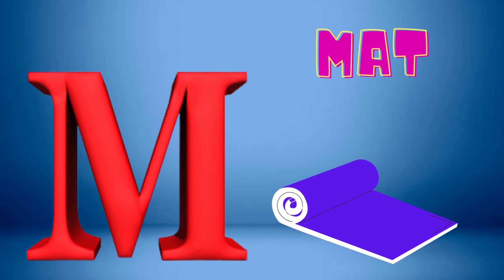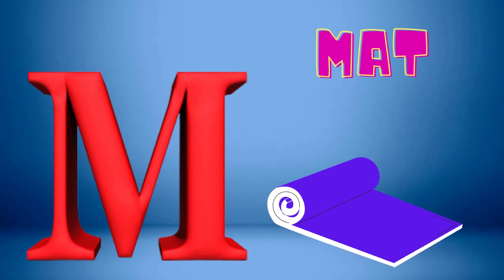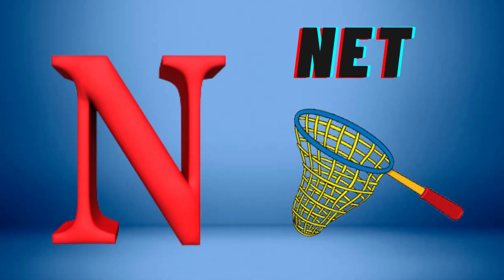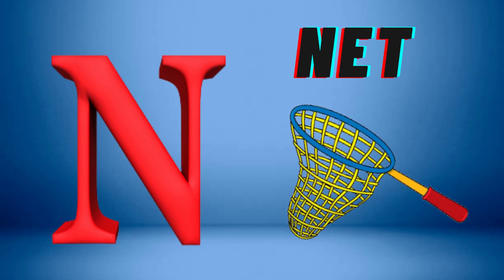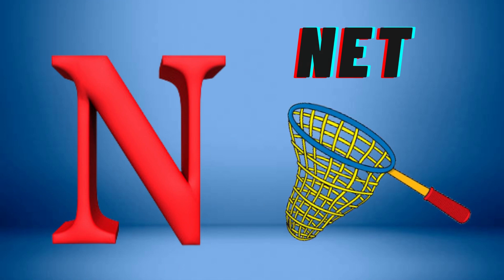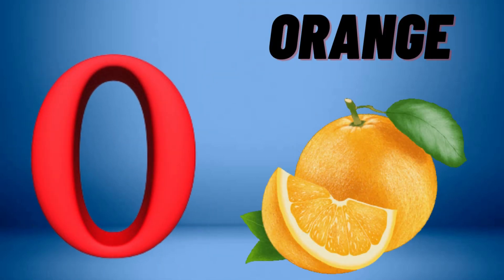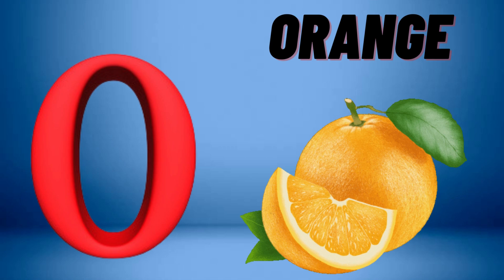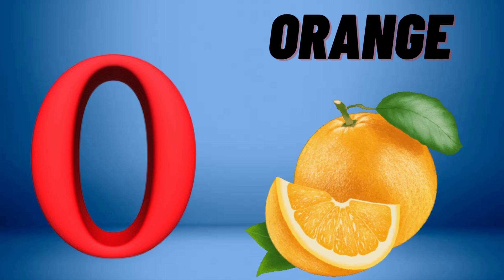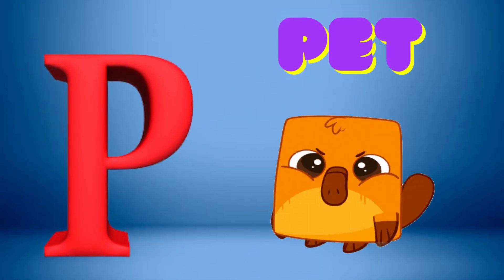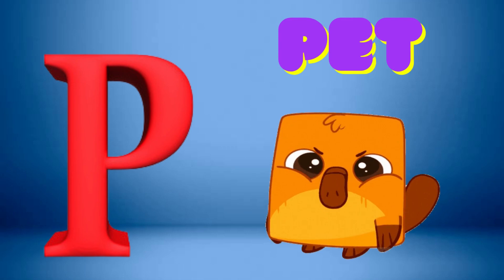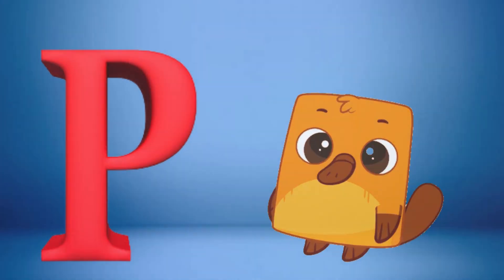M is for Mat, M-M-Mat. N is for Net, N-N-Net. O is for Orange, O-O-Orange. P is for Pet, P-P-Pet.